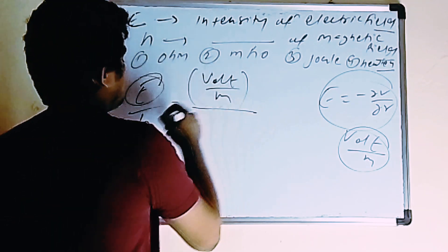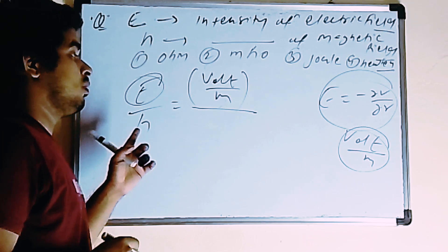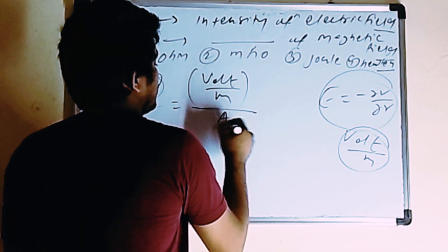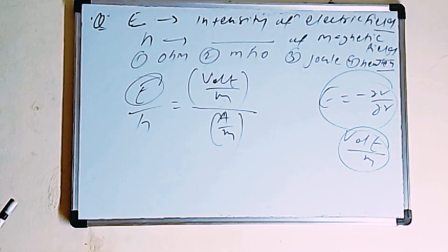If I will ask you H, dimension of H, you know current by meter. A by M. You can say A by M. Agree? Tell me.